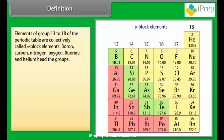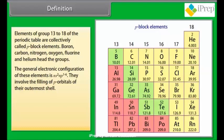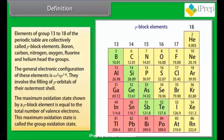Definition. Elements of group 13 to 18 of the periodic table are collectively called P-block elements. Boron, carbon, nitrogen, oxygen, fluorine, and helium head the groups. The general electronic configuration of these elements is NS2 NP1-6. They involve the filling of P-orbitals of their outermost shell. The maximum oxidation state shown by a P-block element is equal to the total number of valence electrons. This maximum oxidation state is called the group oxidation state.